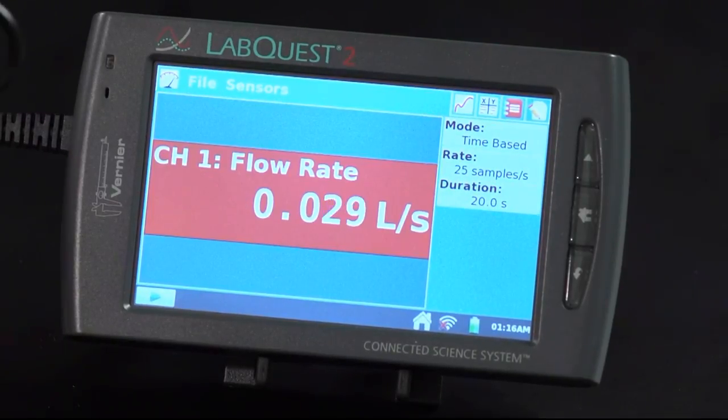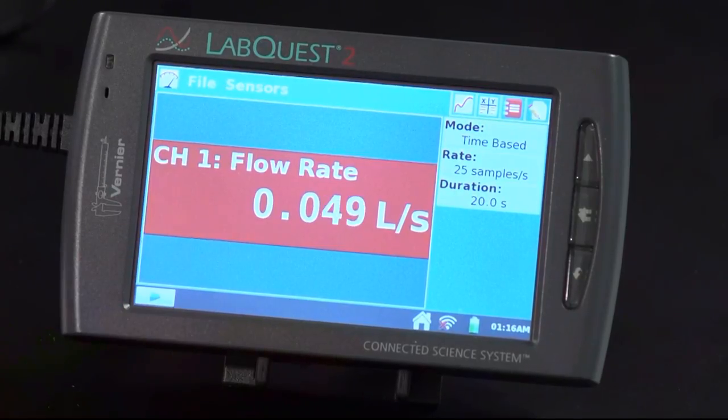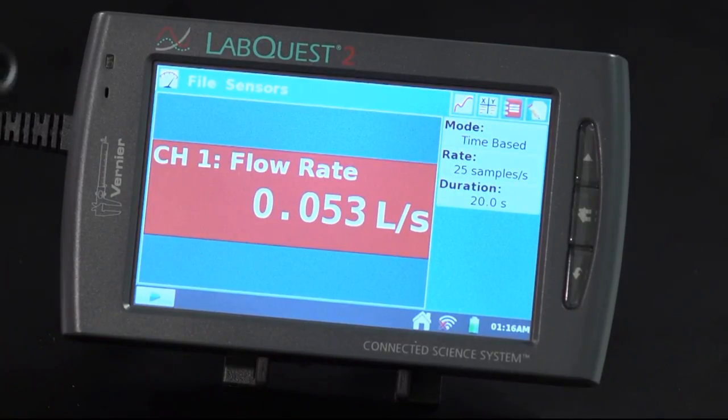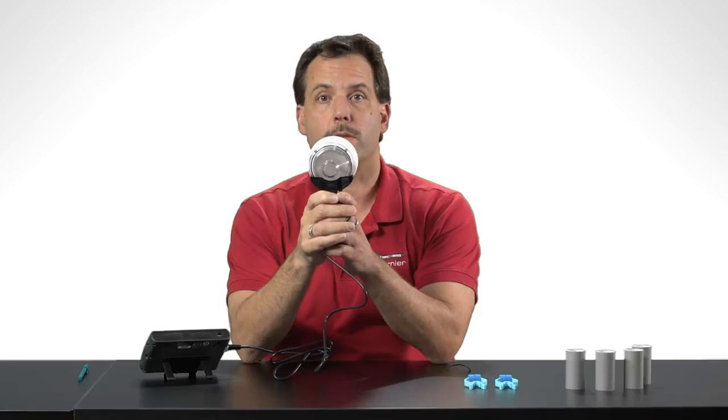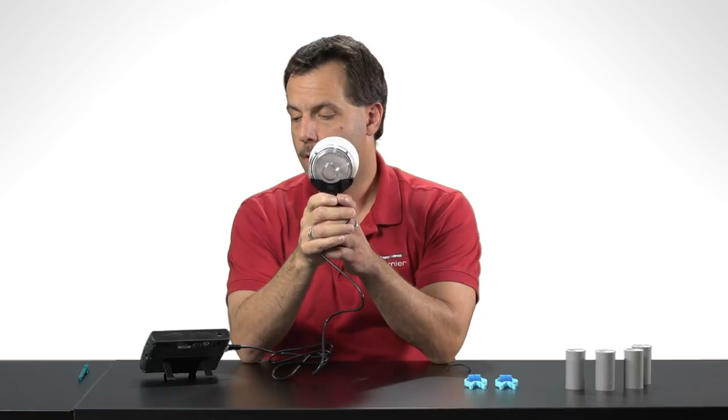And what you should see now over at the LabQuest is that there's a flow rate that's being displayed. But there really shouldn't be any flow rate. I'm not breathing through it. Nothing's happening. So I need to zero the device to make sure that there's no flow. So I'm going to be using it in about this position. So what I'm going to do next is zero the spirometer.